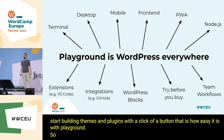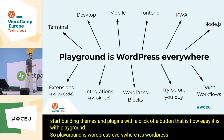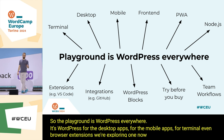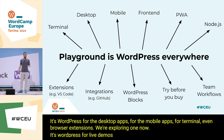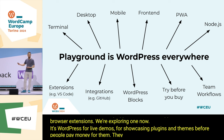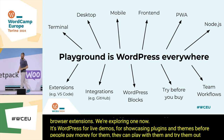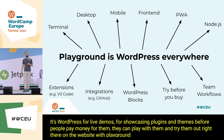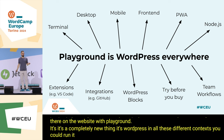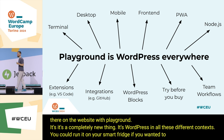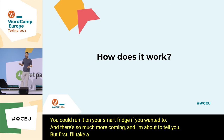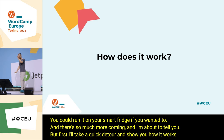Playground is WordPress everywhere — desktop apps, mobile apps, terminal, even browser extensions we're exploring now. It's WordPress for live demos, for showcasing plugins and themes before people pay money for them. It's a completely new thing — WordPress in all these different contexts. You could run it on your smart fridge if you wanted to. There's so much more coming, but first let me take a quick detour and show you how it works.